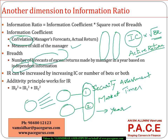For example, if the manager is making two forecasts per quarter, his breadth is directly eight. The information coefficient comes out as a correlation between forecasted returns and actual returns; breadth is simply the number. The manager with the highest information ratio will be chosen because the value addition will be greater with a higher information ratio.